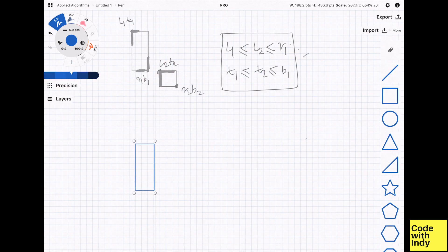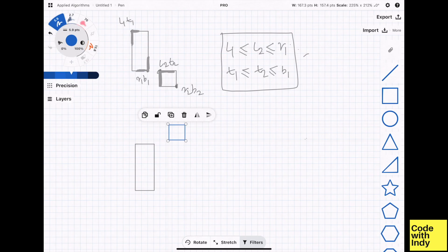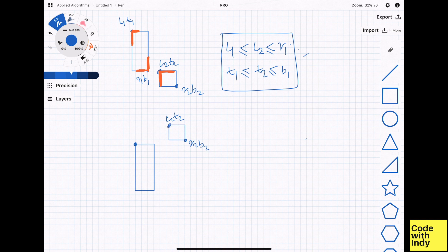Similarly, we can quickly look at the scenario where rect 2 moves south-west direction relative to rect 1. Just as before, if B2 is between B1 and T1, and L2 is between L1 and R1, then this is a collision.